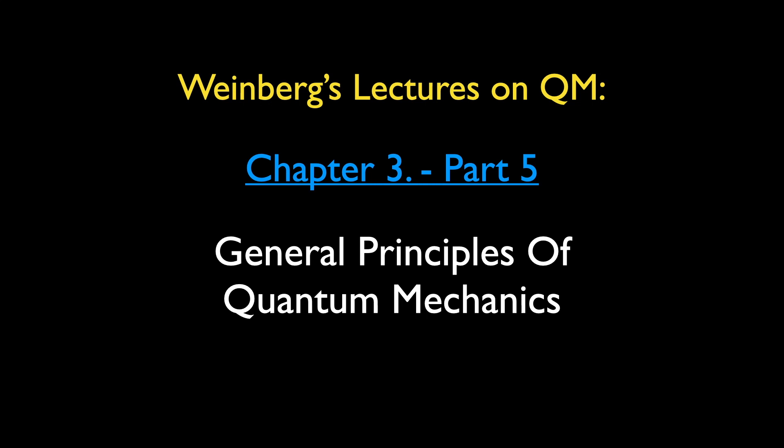Hello friends, this is lecture 5 of a series where we go through the book on quantum mechanics by Steven Weinberg. This is part 5 of chapter 3 on the general principles of quantum mechanics. As explained in the first lecture, we will be reading the book in the sequence chapter 3, then 2, followed by 1, and continue from there according to the regular order of the book.